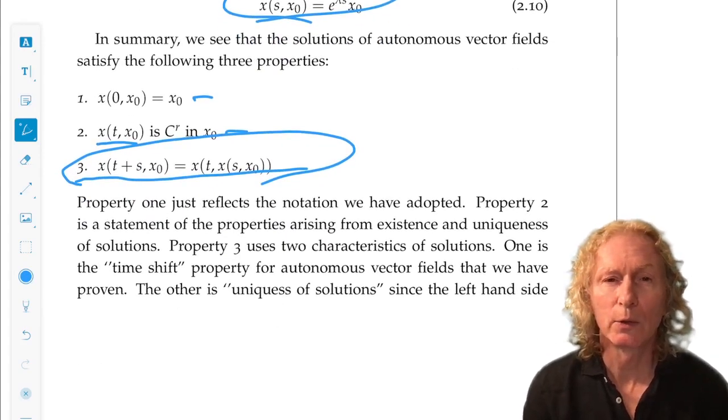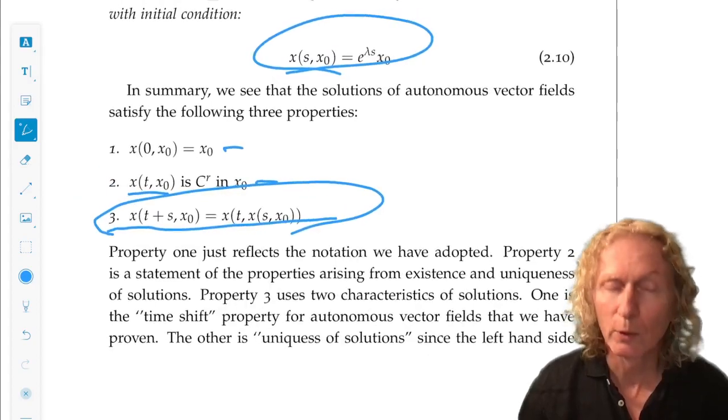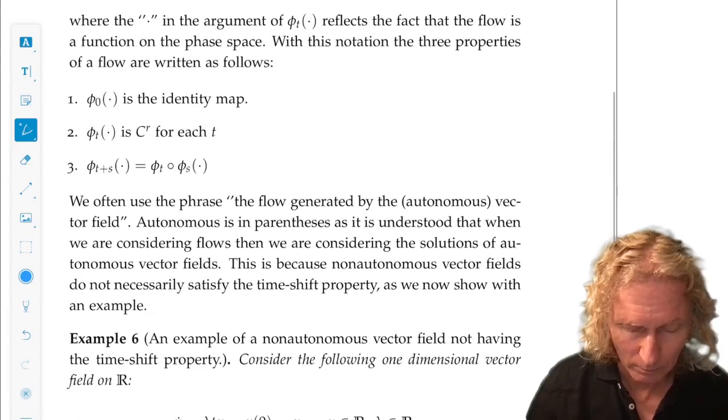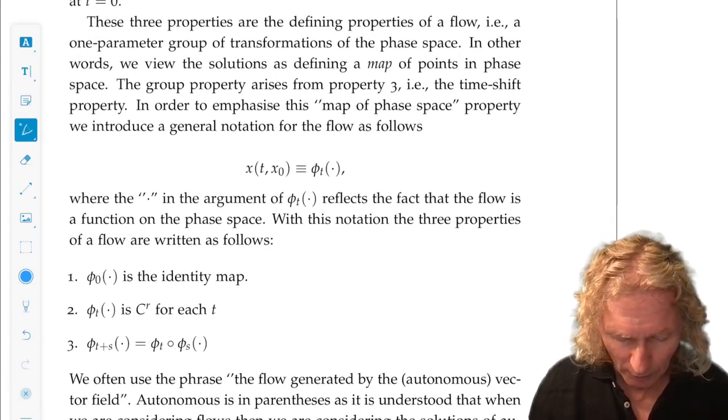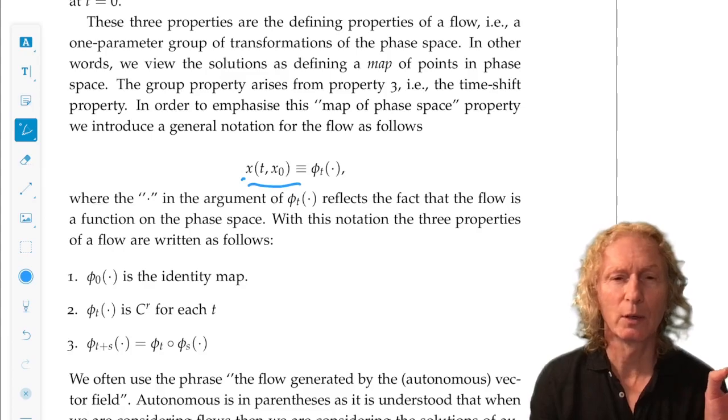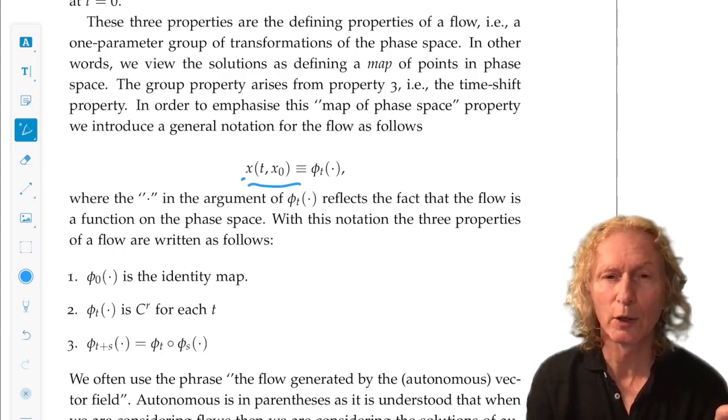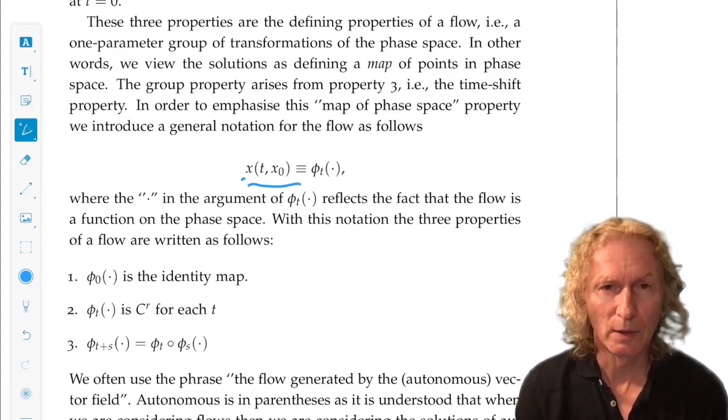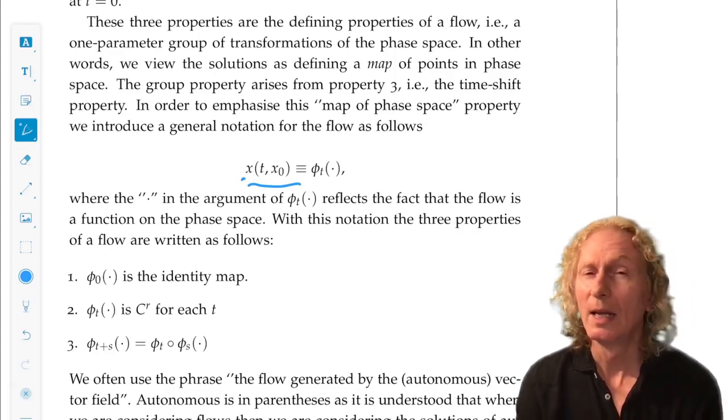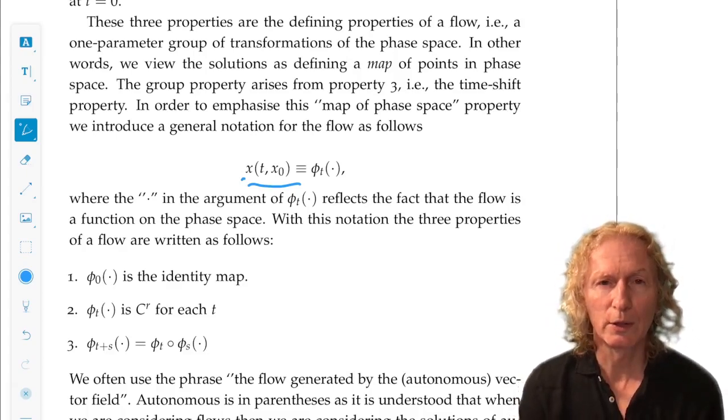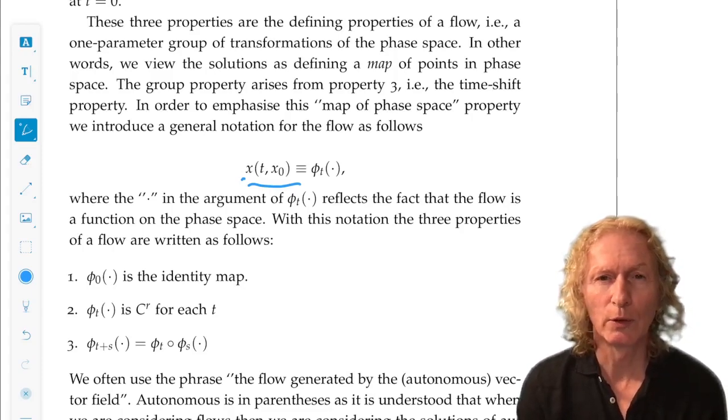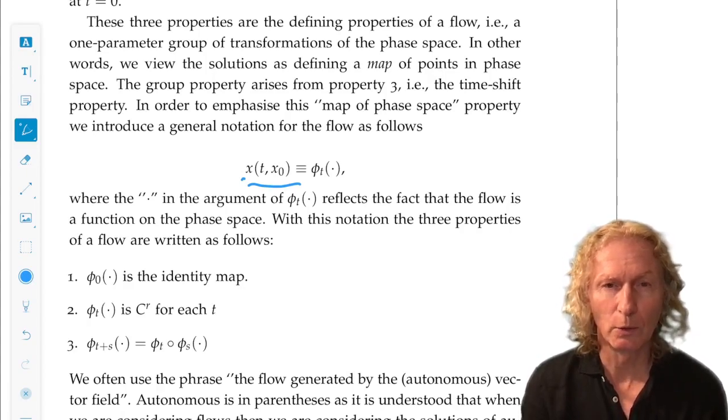Okay. Now, we're going to introduce some fancy notation to rewrite these three properties. So, x of t comma x_0. We're going to leave out the middle argument, t equals 0, because we're going to take it as given that the initial time is 0. And we can always do that for autonomous equations because we can always shift to t equals 0. And that's why, in many books on autonomous systems, they always assume that the initial condition is taken as t equals 0.